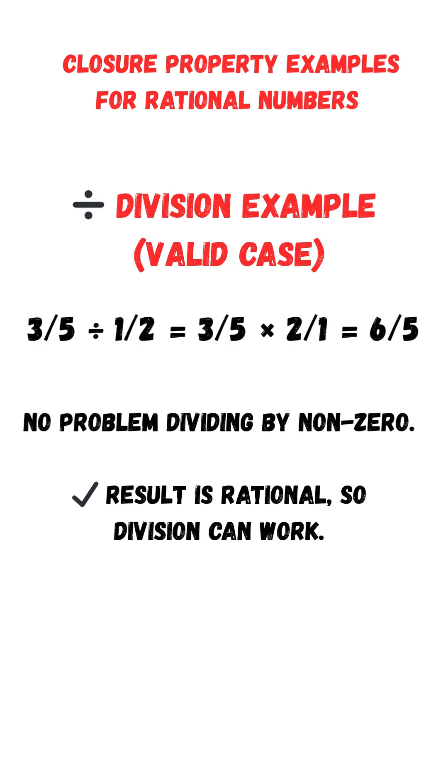Division, valid case: 3 fifths divided by 1 half equals 3 fifths times 2 over 1, equals 6 fifths. No problem dividing. The result is still rational. So, division can be closed, but not always.